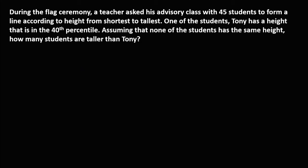First, we need to find the position of Tony. Since Tony is in the 40th percentile, using the percentile formula, P sub K equals K over 100 times N plus 1. N is the total population. Since we have 45 students, N equals 45. Since we're looking for the 40th percentile, K equals 40. So this is 40 over 100 times 45 plus 1.